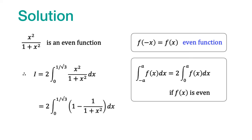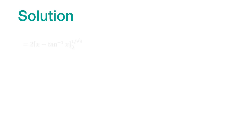We can divide the numerator by the denominator and write down the integral in a simpler form. Each part is now easy to integrate: the integral of 1 is just x, and the integral of 1 divided by 1 plus x squared is tan inverse of x. We put that in and can now evaluate it.